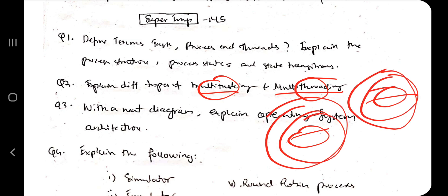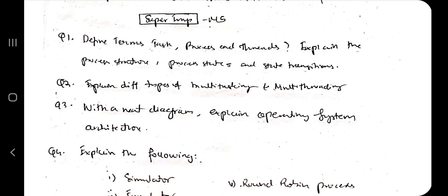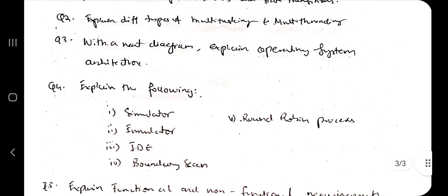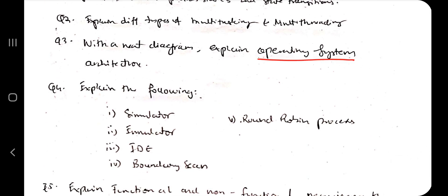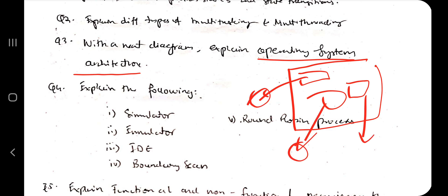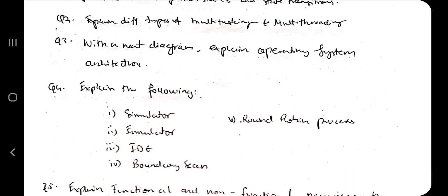Next one is, with a neat diagram, explain operating system architecture. Architecture first you have to make, and after that mention what are the components present in that and what are the different things used to perform, like what are the functions you have to mention and how it gets embedded into the main system and how it works. So these are the four key points you have to mention in this question.